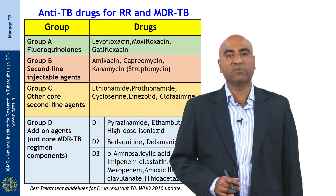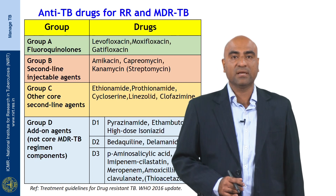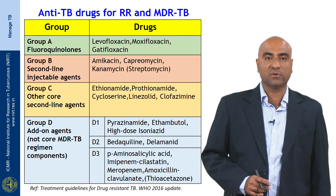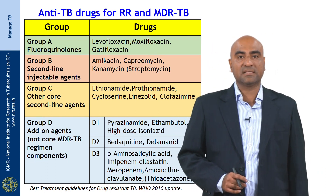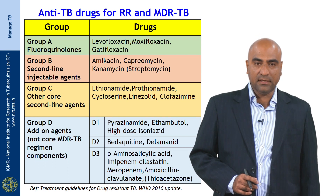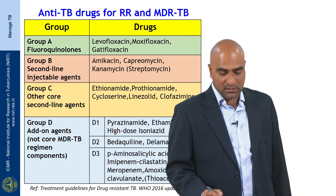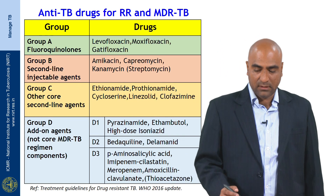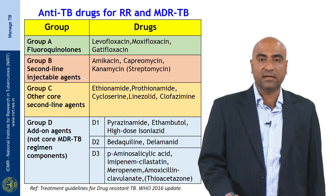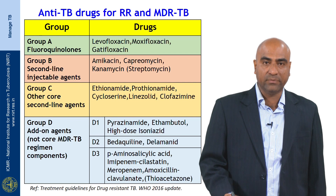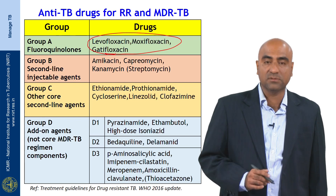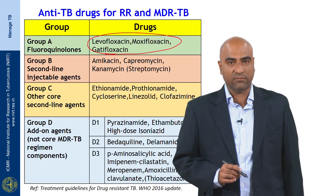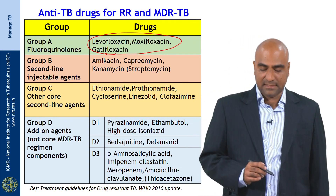Let us now see the various groups of drugs used for the treatment of rifampicin-resistant and multidrug-resistant tuberculosis. The recent WHO classification in 2016 has the following groups. In Group A are included the fluoroquinolones used for treatment of rifampicin-resistant and MDR-TB: levofloxacin, moxifloxacin, and gatifloxacin.